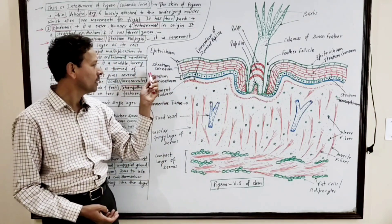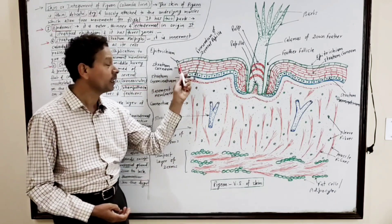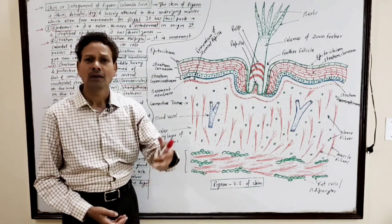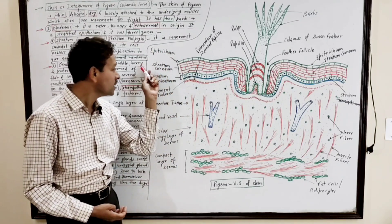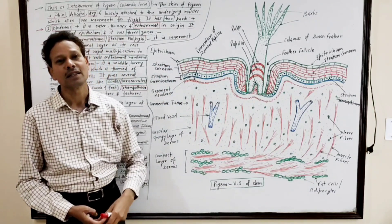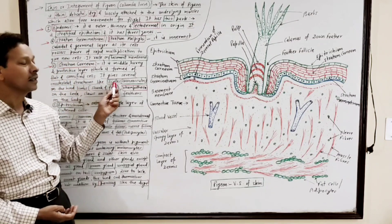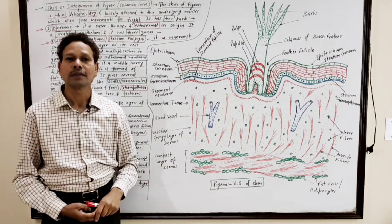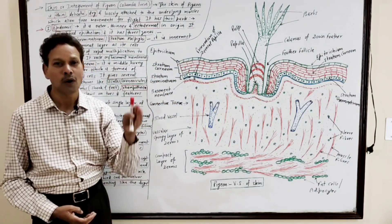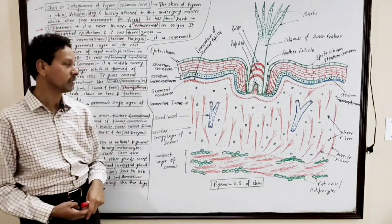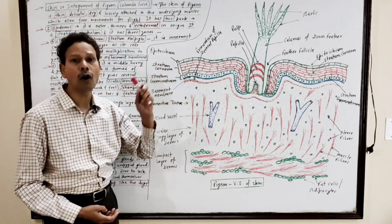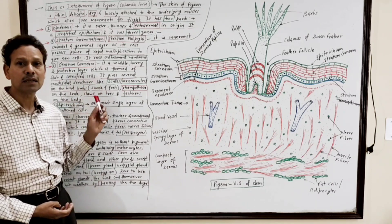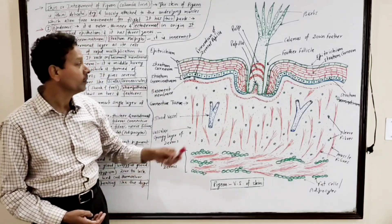The stratum germinativum is the only layer that rests on a basement membrane. The middle zone of the epidermis is the stratum corneum, which consists of flat cornified cells. This stratum corneum gives rise to several exoskeletal structures like scales or corneous cubes present on the hind limbs, as well as rampotheca on the beak and claws on the toes.